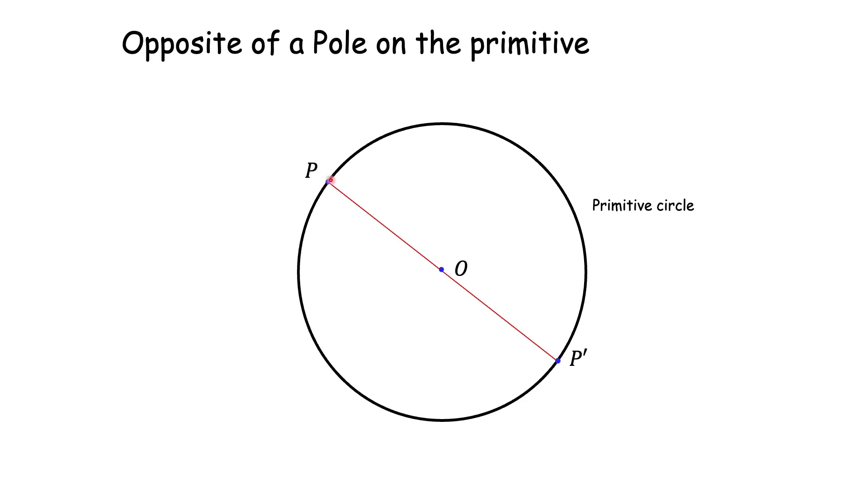P' also lies on this vertical plane through P O. P' will also lie on this vertical plane. P' lies on the intersection of the diameter through P and the primitive circle. It has to be the diametrically opposite point P'. Thank you very much.